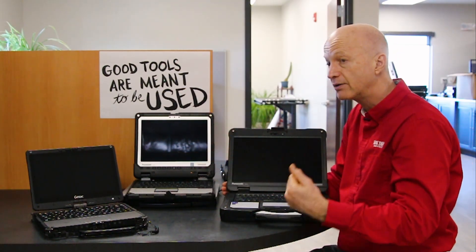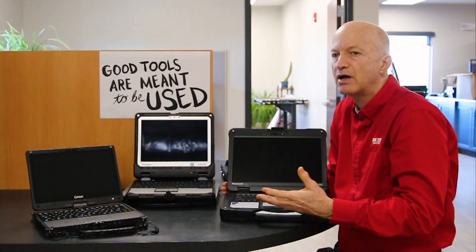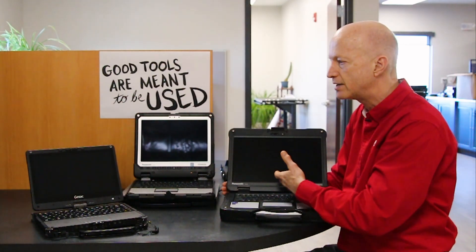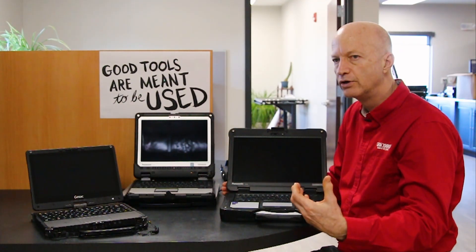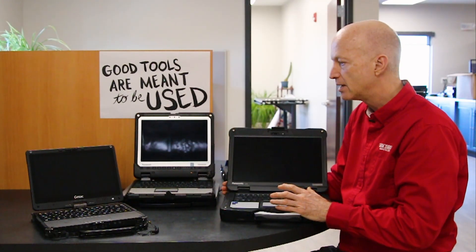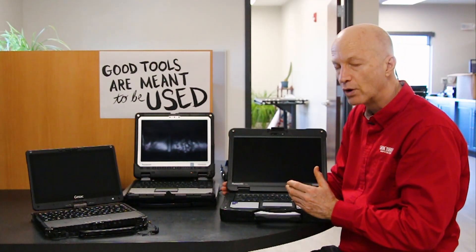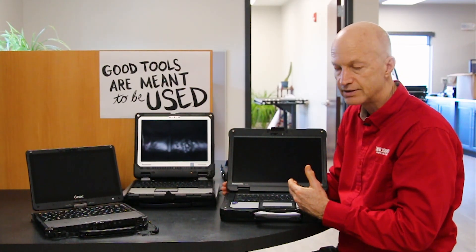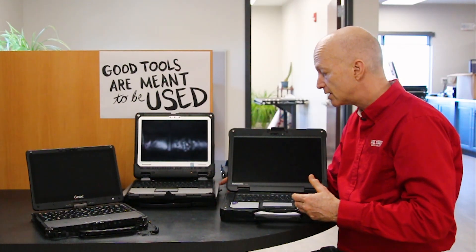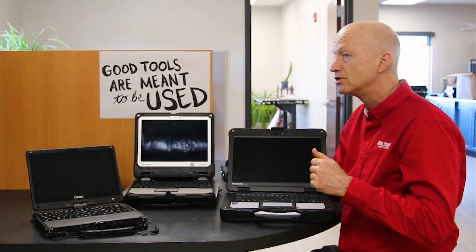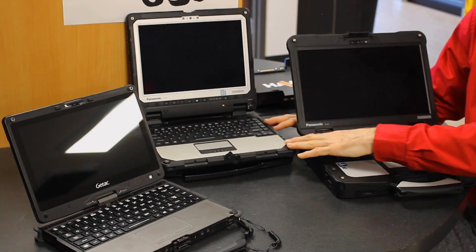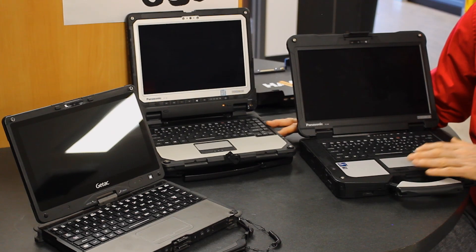So that's very important. The other thing is, am I going to be using the laptop in bright daylight? There's something called nits which measures the brightness of the screen. The higher the nit rate, the better you can see it in daylight. For example, the FZ40 has a nit rating of 1200 nits, the CF33 has 1000 nits, the FZ55 has 800 nits. So the higher the number, the better you can see in daylight, but they're all considered daylight readable.